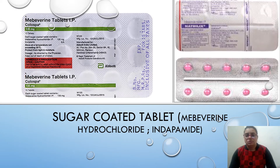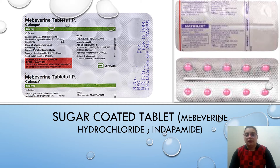Another subtype is sugar coated tablets. The example is Mebeverine tablet IP, known by the brand Colospa. The other one is Natrilix, which contains Indapamide. Both are sugar coated tablets. Sugar coating is generally done to mask the taste of the active pharmaceutical ingredient, and by sugar coating the weight of the original tablet may increase up to 80% of its original weight. Colospa is marketed by Abbott.